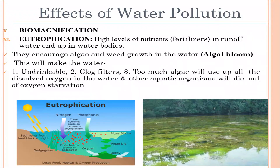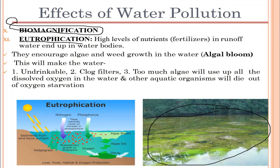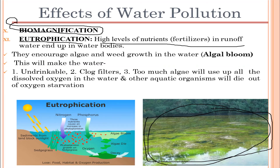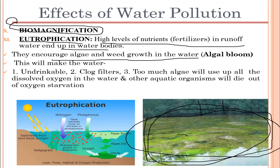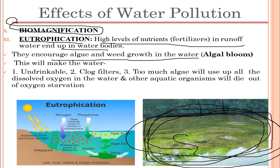Biomagnification refers to the accumulation of contaminants in a particular sea or lake. Eutrophication, as seen in the picture, is the formation of algae on the top surface of a lake or river. High levels of nutrients from fertilizers in runoff water accumulate in water bodies, encouraging algae and weed growth. These algae consume large amounts of oxygen, so marine organisms in that environment do not get sufficient oxygen and die.